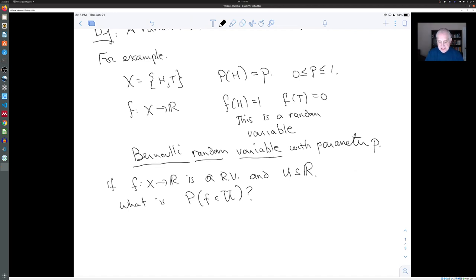Now, for example, what am I really saying here? Well, I'm really saying, what is the probability of the set of outcomes X, where f of X lands in the set U?